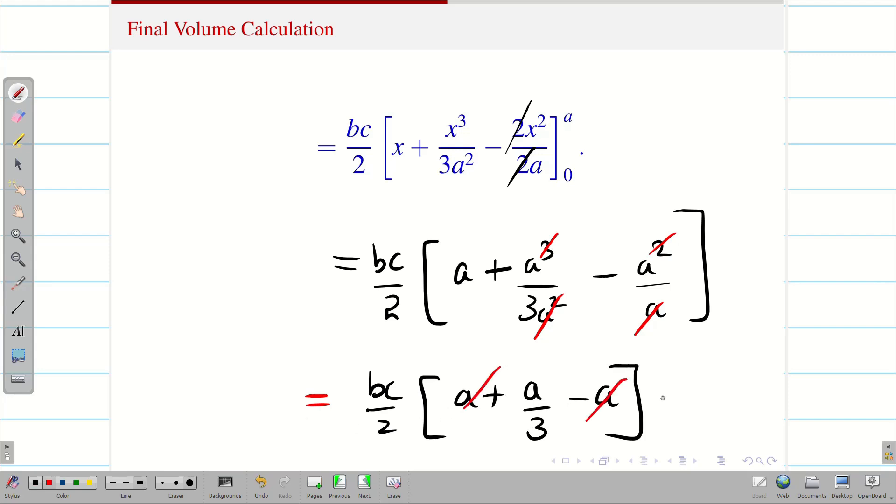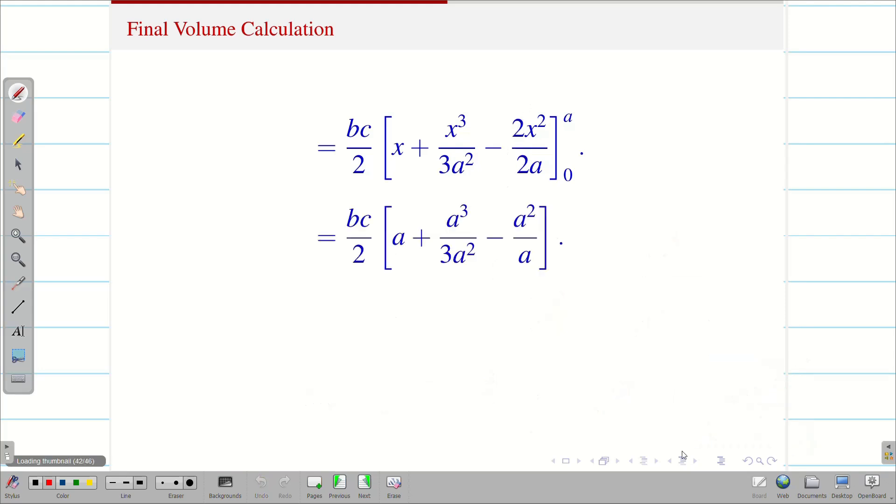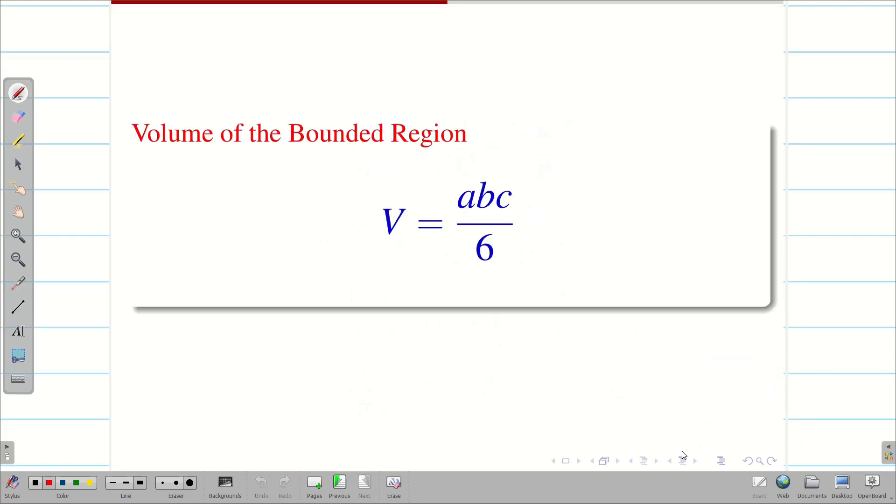Now, these both will get cancelled. Finally, we get abc by 6. You can see the typed version. Therefore, volume of the given bounded region or volume of the tetrahedron is abc divided by 6. Hope you understand.